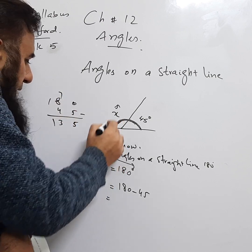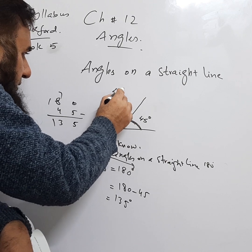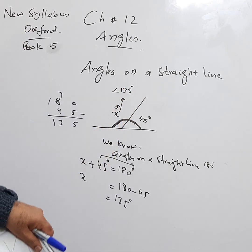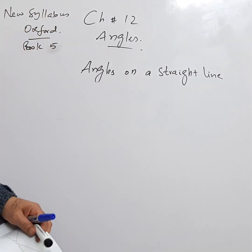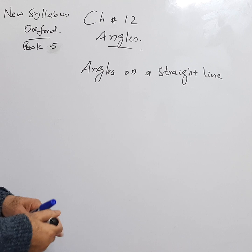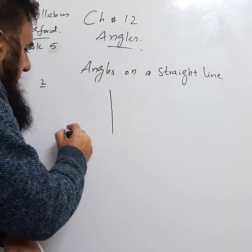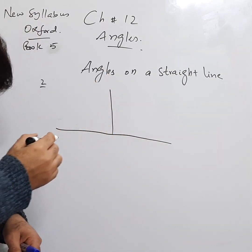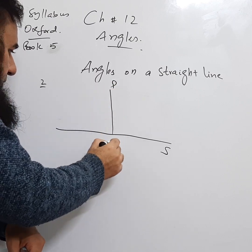So X is equal to 135 degrees. This angle is 135 degrees. Then on page 239, they have given example number 2, where this is the straight line and this is the perpendicular. This is S, this is P, this is Q, this is R.